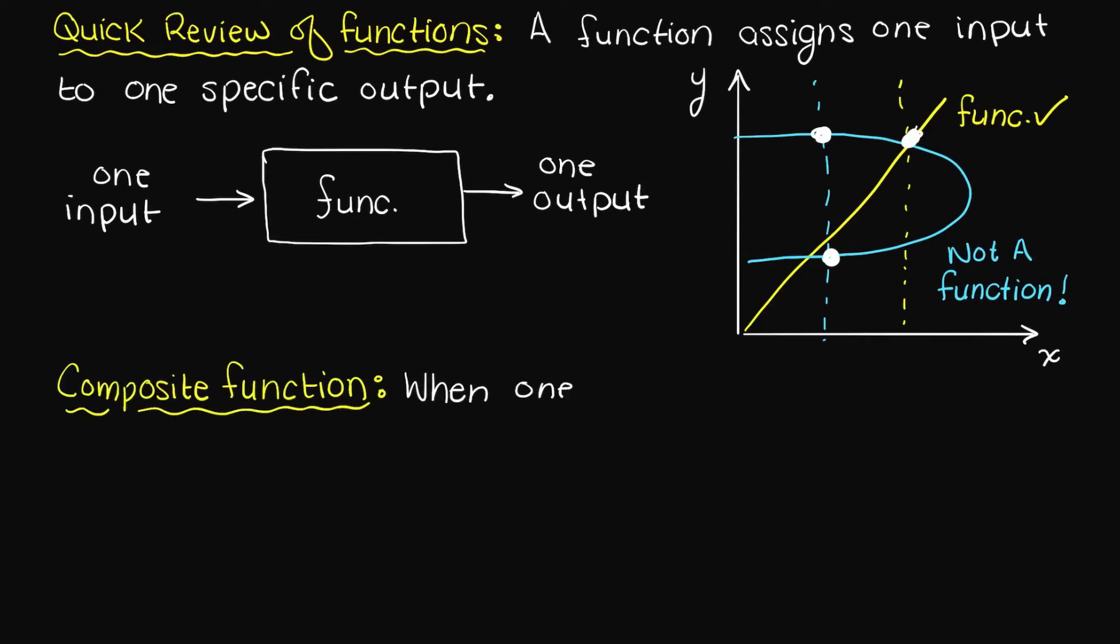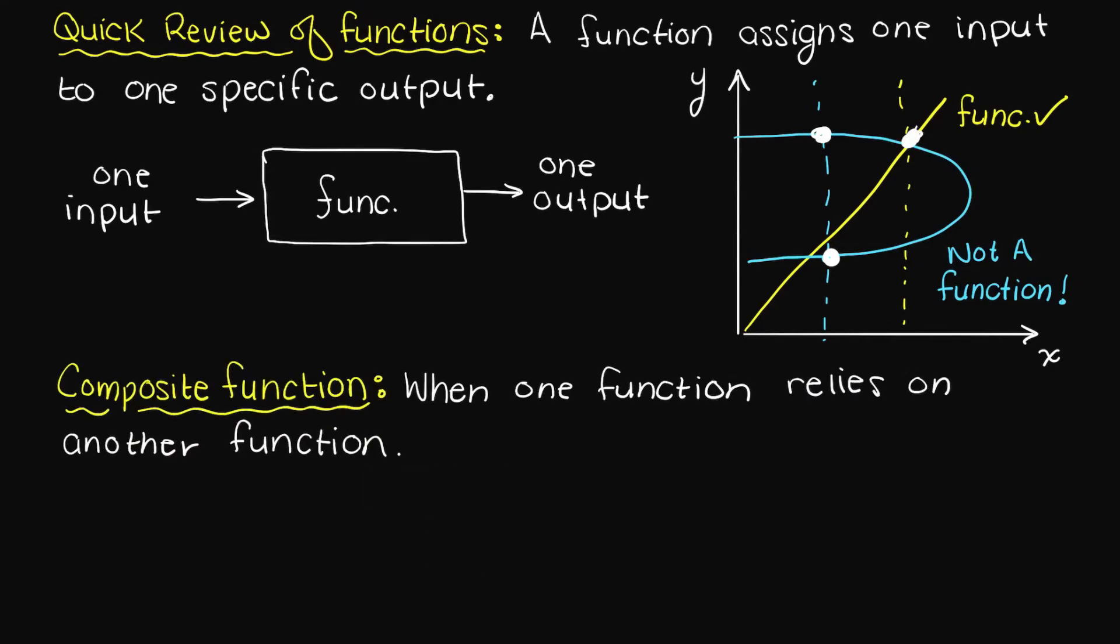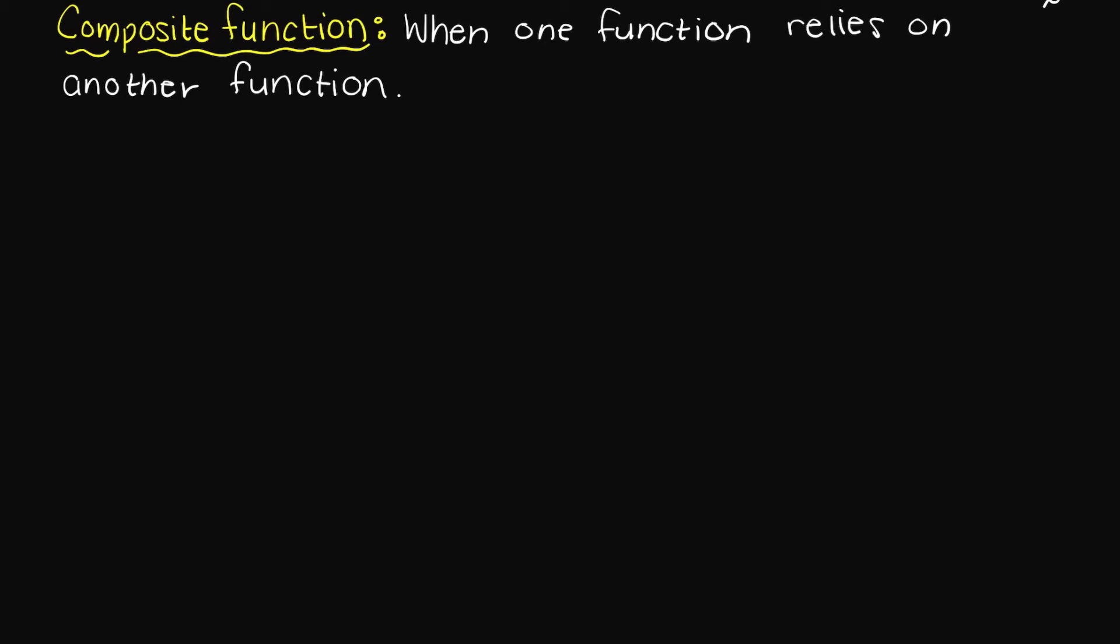A composite function is essentially when one function relies on another function. Well, how does that work exactly? So we know we're going to have two functions. To more easily differentiate between them, let's call our first function f of x and the second function g of x. Then our resulting composite function we can call h of x.